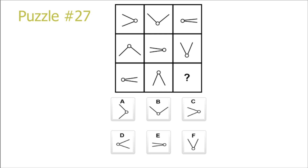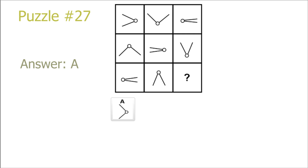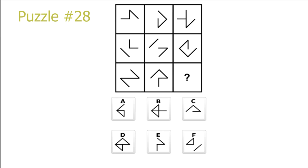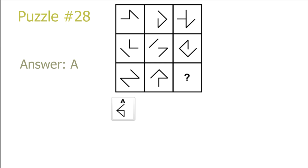Puzzle 27. Here we see there is a rotation on the rows by 90 degrees clockwise, and there is a change of shape in every rotation, so we get that A is the correct solution. Puzzle 28. Another addition and cancelling puzzle. If we add picture 7 and 8, we get that A is the correct solution.